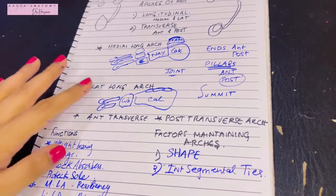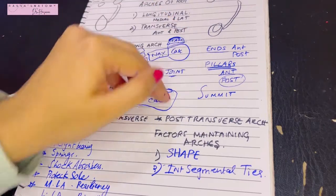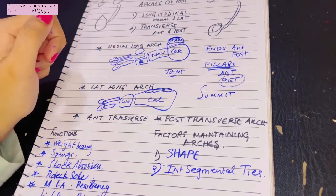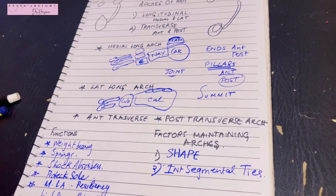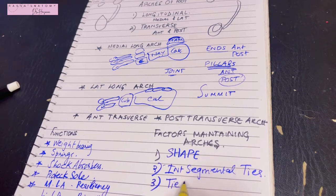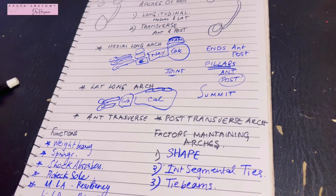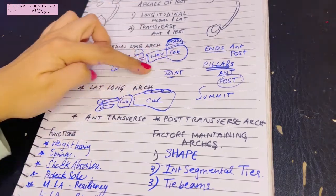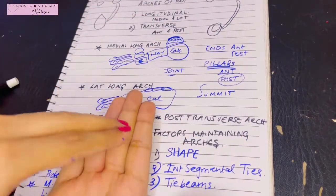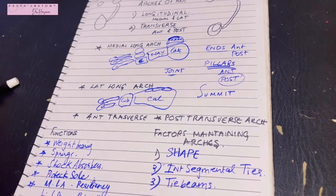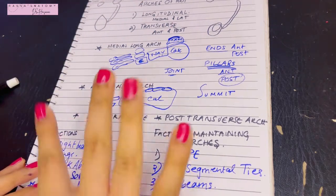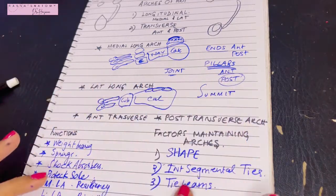The second factor is intersegmental ties. You have to link the various bones of the foot to each other. Joints are formed, but the segments must be held together — this is done by the ligaments and muscles. The third factor is tie beams, which are structures joining the anterior end to the posterior end of the arch, creating a tightened, arched structure.